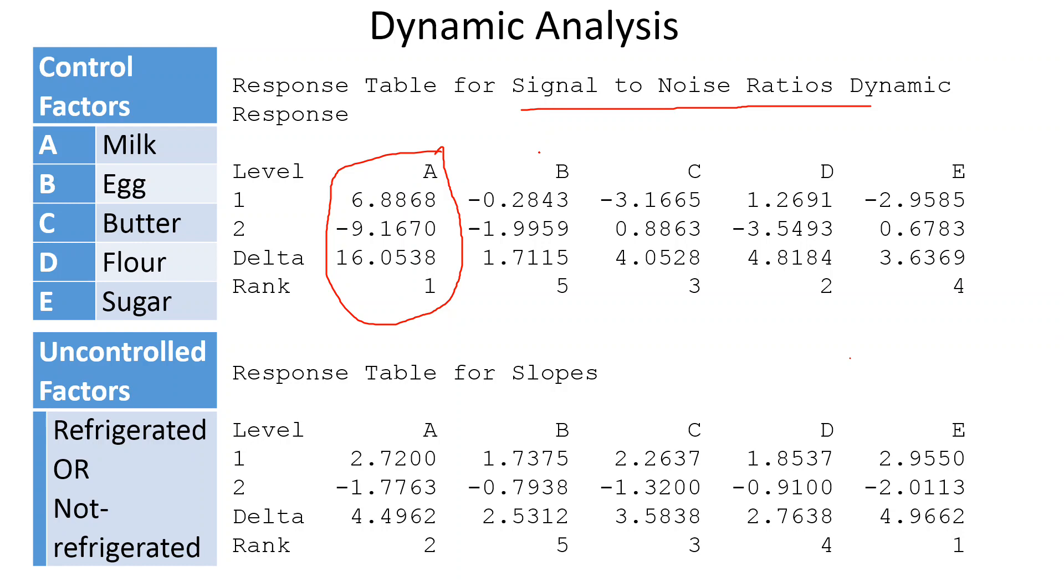In later videos, I've produced all these calculations using Excel using formulas manually so you can see what's going on behind to calculate these numbers. There's also a Minitab how-to video. The slope table is produced for dynamic analysis rather than the mean table. The slope has a similar explanation to mean. If you're looking for higher is better, like with this delicious cake, then the higher slope means better. In another video, I'll explain how to interpret all of this dynamic analysis slope and signal-to-noise ratio.